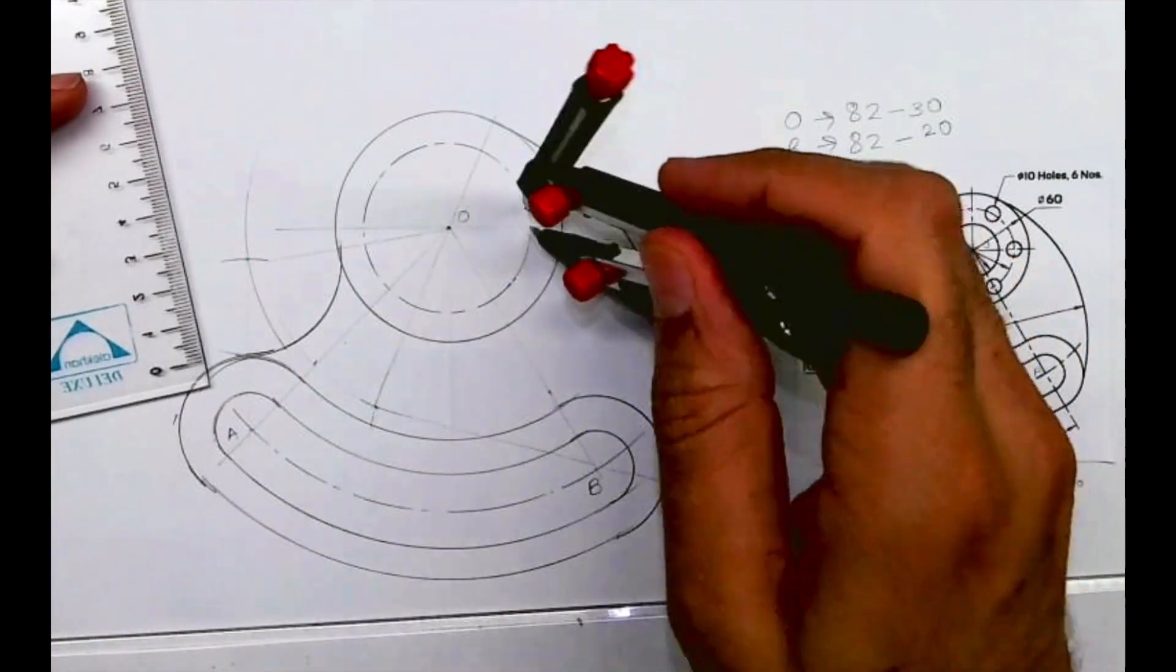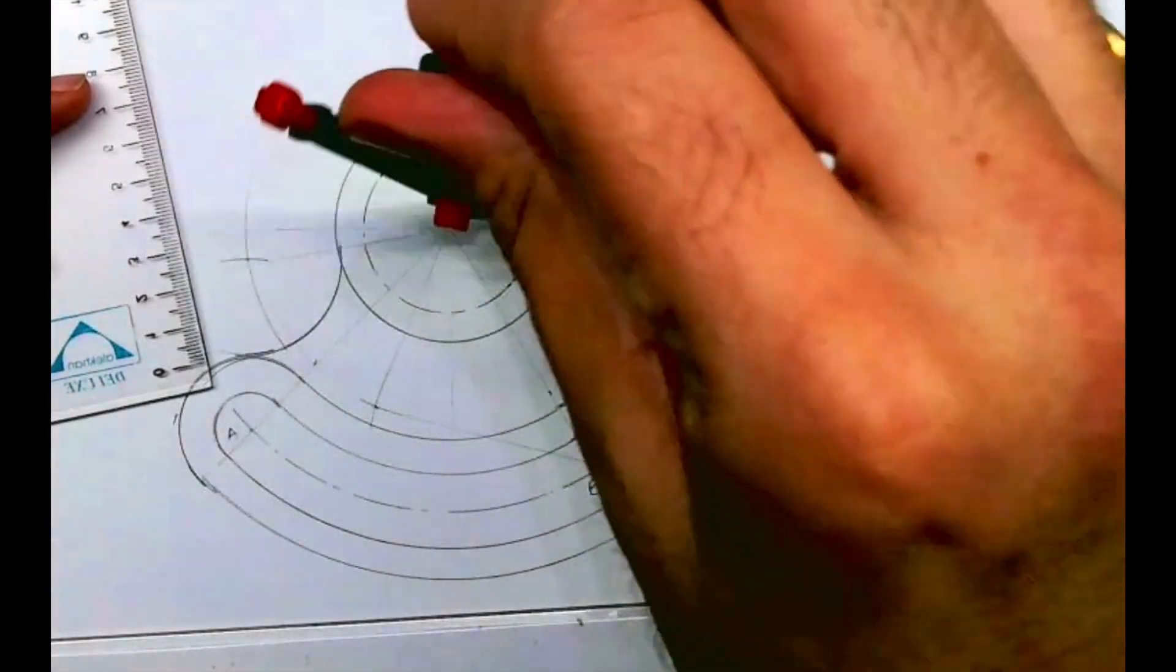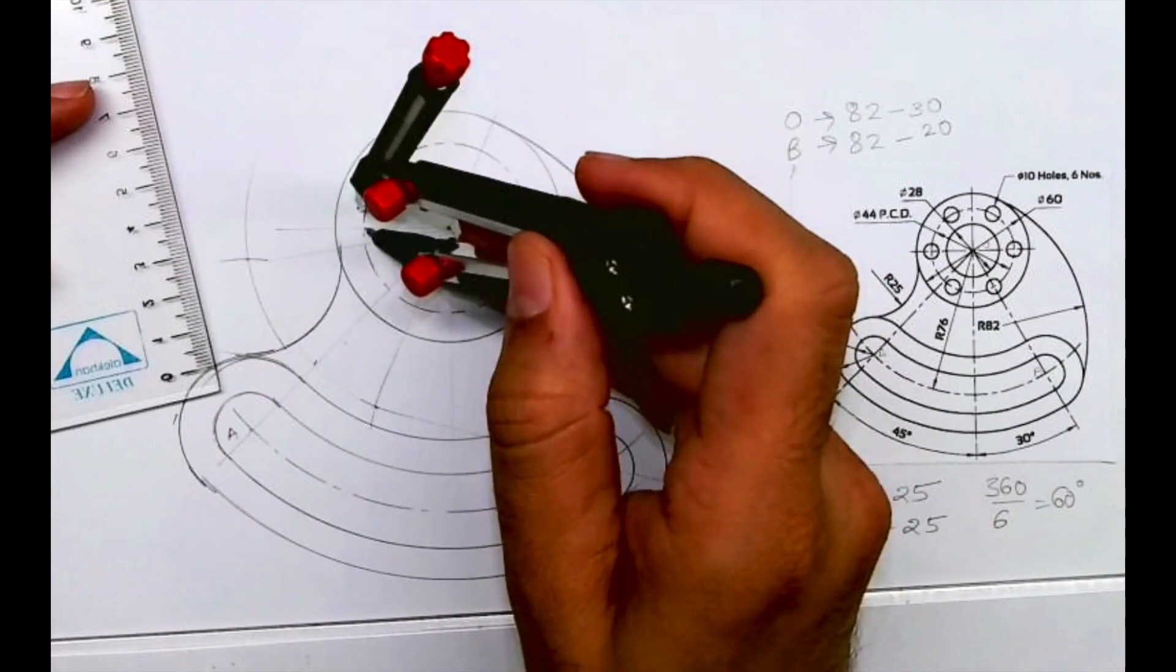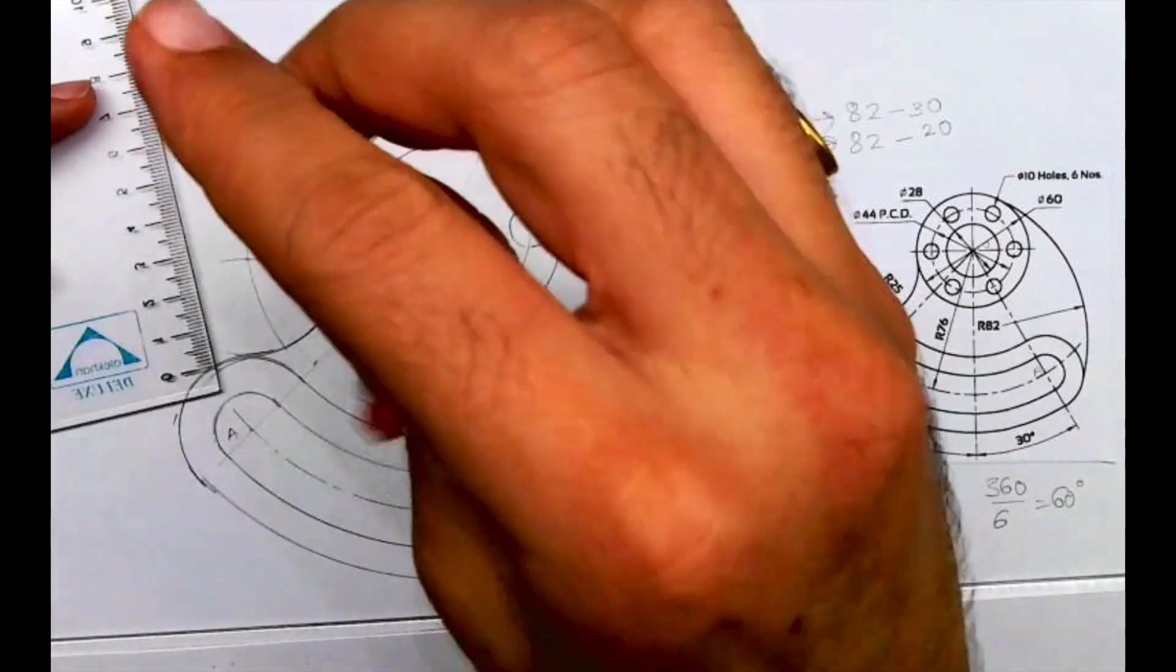So I will take radius 5 and I will draw two circles which are there on the horizontal line. And for remaining circles I will draw 60, 60 degree. I can use set square or protractor.